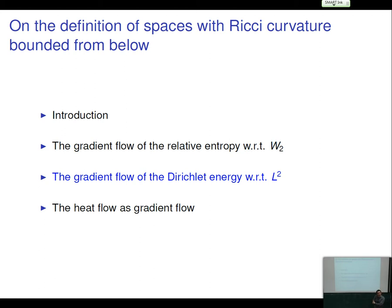We start by introducing what the Dirichlet energy is, or the analogous of Dirichlet energy in a metric measure space. The Dirichlet energy is very much linked to the Sobolev space W^{1,2} — it should be one half the integral of |∇f|² . On ℝ^d or on a Riemannian manifold we take the distributional gradient and integrate its square with respect to the volume measure.